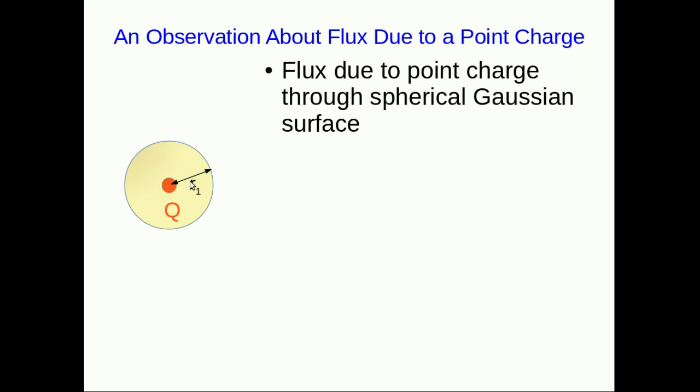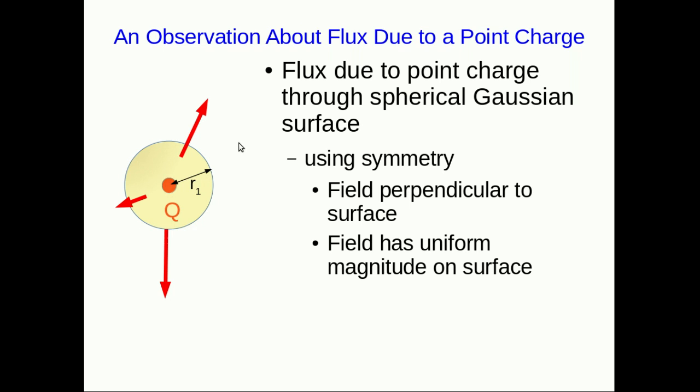And I've given it some arbitrary radius r1. And we're going to make maximal use of symmetry. We know that the field due to this charge has spherical symmetry centered on the charge. And so we've chosen a Gaussian surface that matches that symmetry. And because of that, the field is perpendicular to the surface everywhere. And it has a uniform magnitude everywhere on the surface. That means writing down the flux is going to be simple.